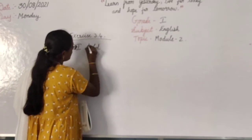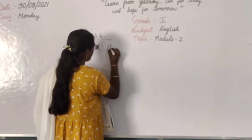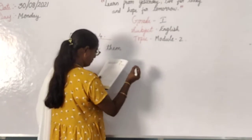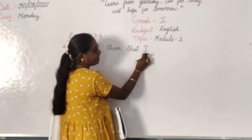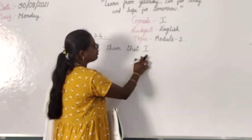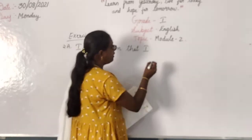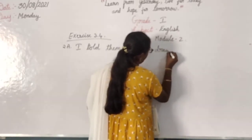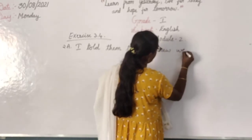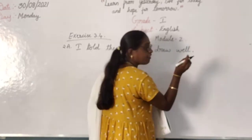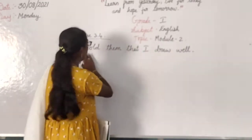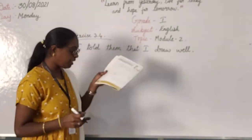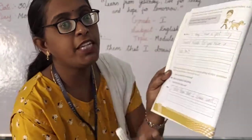I told them that I — see capital letter here, because that 'I' they have given in small letter. 'I' always you should start with capital letter. I draw well — W, E, L, L. Here full stop, children. They have given question mark in the book, but the answer will be full stop. Please copy down this sentence. In page number 14, second answer. Complete it to that.